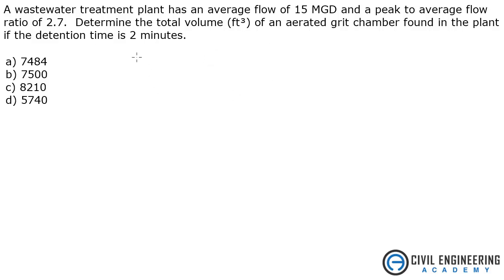So let's write down what we have here. We have average flow, so Q average equals 15 MGD. This is Q peak to Q average ratio of 2.7, and the detention time, so we'll call that time, is 2 minutes.